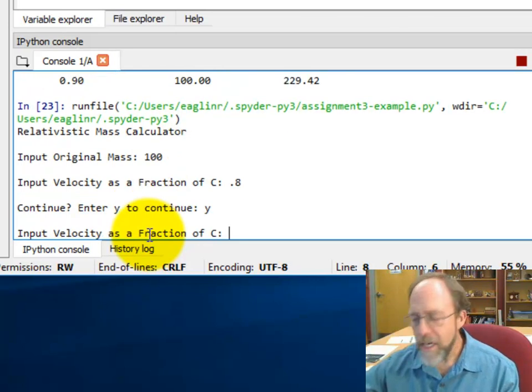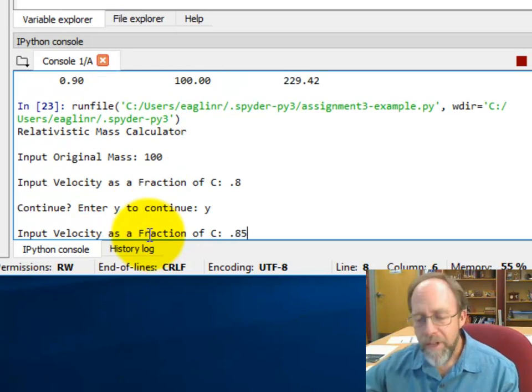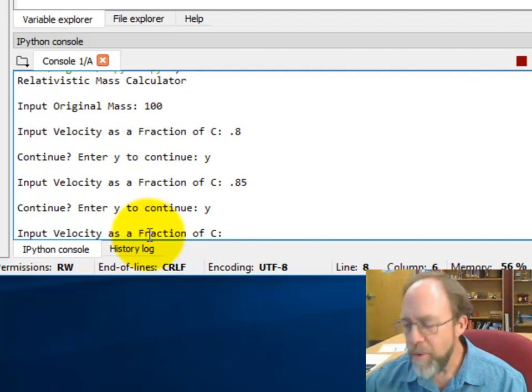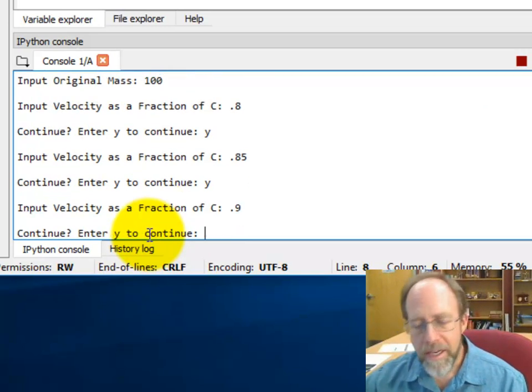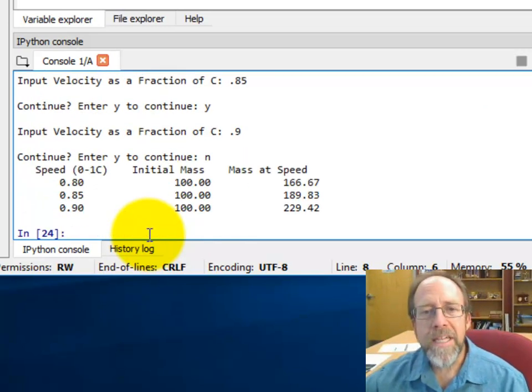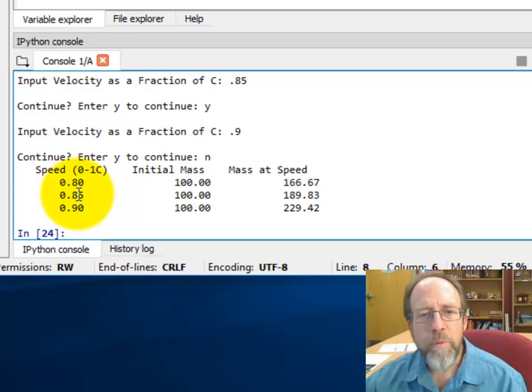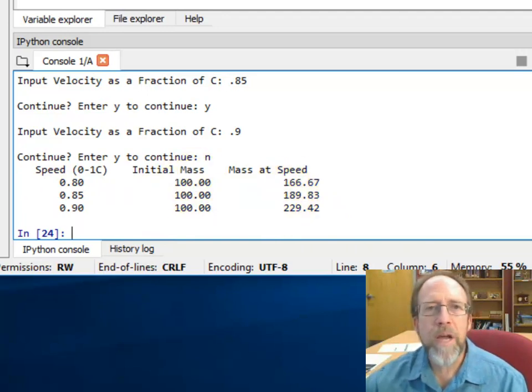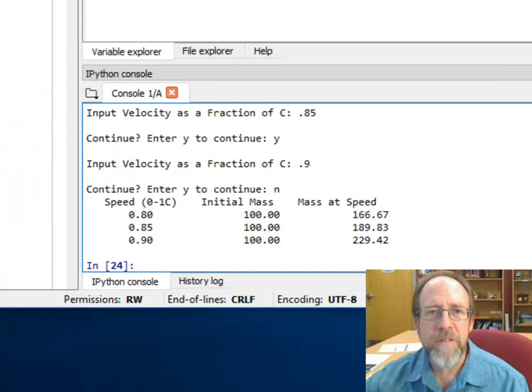I could say I start with 100, let's put in 0.8, and let's continue, and let's put in 0.85, and continue, and put in 0.9, and not continue. I can see that somewhere between 0.85 and 0.9, because I was able to do multiple values in there, I can see that I was getting close to 200.